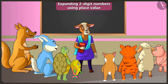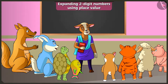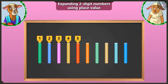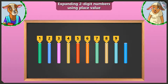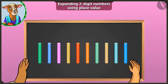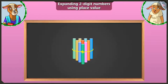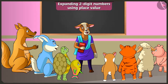So now Lily, make a bundle of ten and show us. I will tie these one, two, three, four, five, six, seven, eight, nine and ten chocks like this here. Come on, it has become a bundle of ten. Well done, Lily.